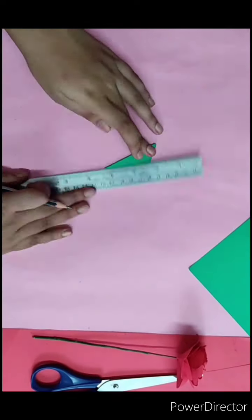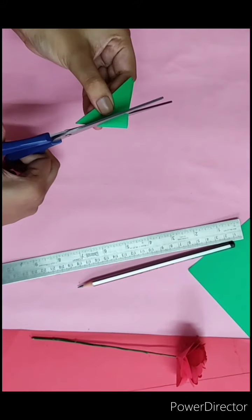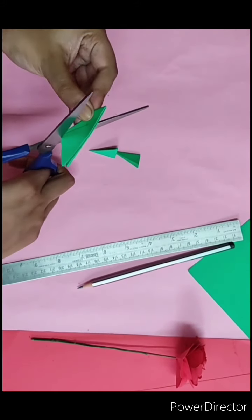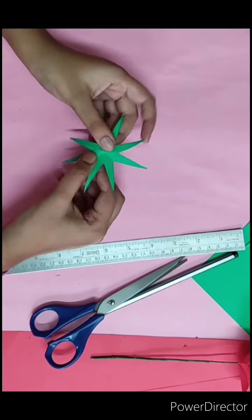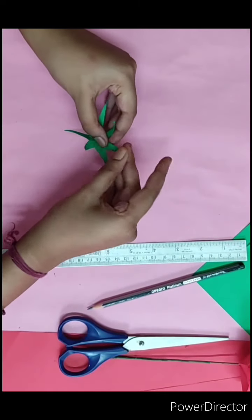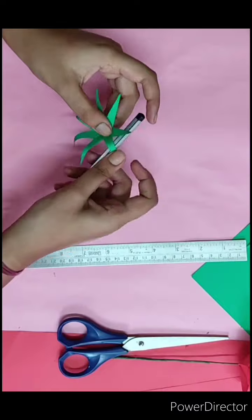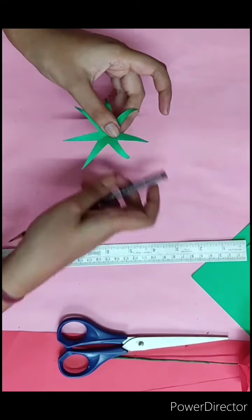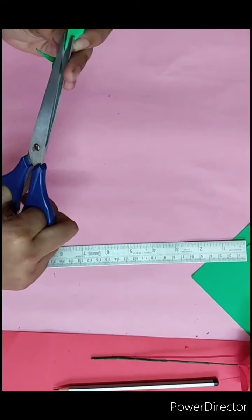Now cut the paper at an angle like this. Make a cut in it and paste it, then stick it to the wire.